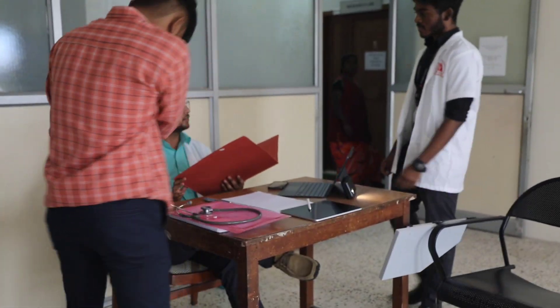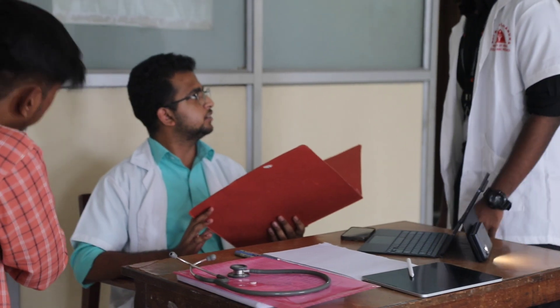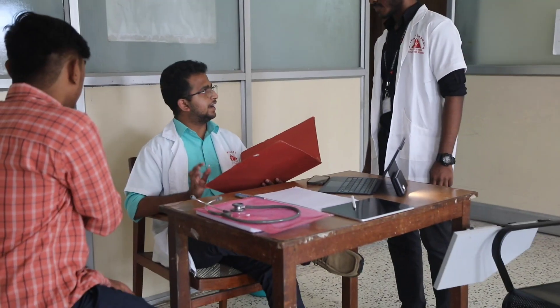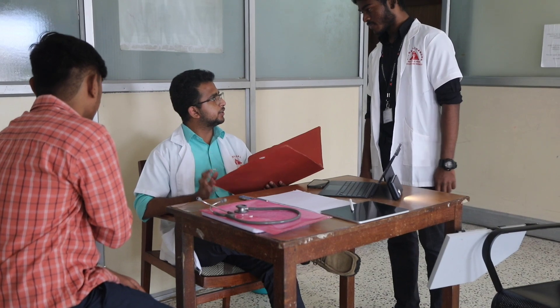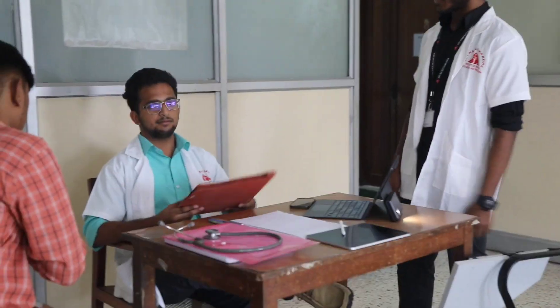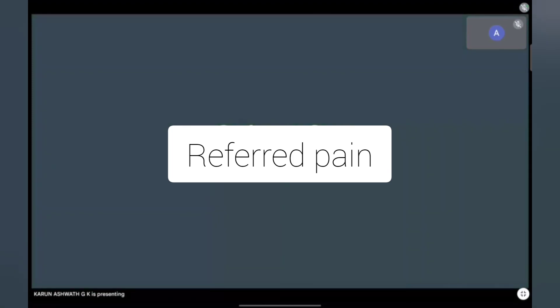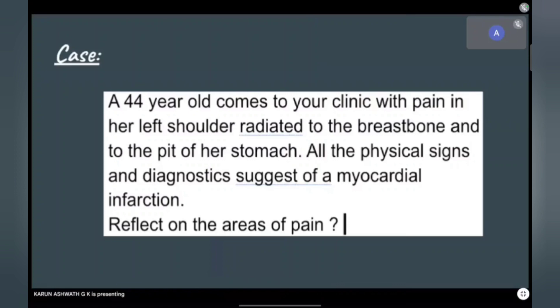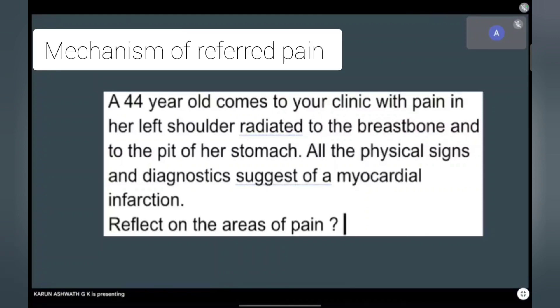I suspect the patient has acute myocardial infarction. I am advising to perform the evaluations and get the treatment done immediately. So students, we have a case of a 44-year-old with suggestive signs of myocardial infarction and pain radiating from the left shoulder to the breast bone and to the pit of the stomach. You'll get to know more about this case throughout this lecture.